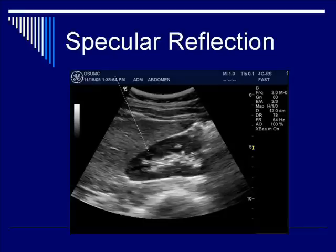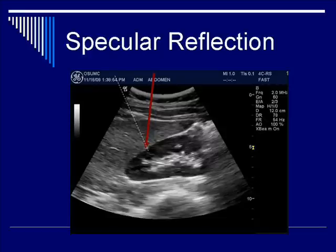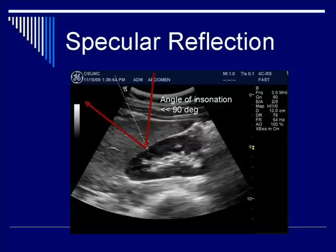On the other hand, if you draw a normal line towards the more hypoechoic region of the superior part of the kidney, and you draw an incoming ultrasound beam reflecting off of that surface, you see that because the angle of insonation in this case is much less than 85 to 90 degrees — it's probably around 60, 65, 70 degrees — the incoming beam hits the fascia, but it reflects outside the field of view.